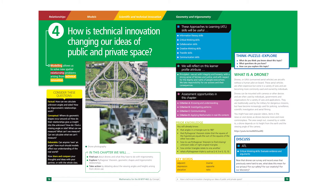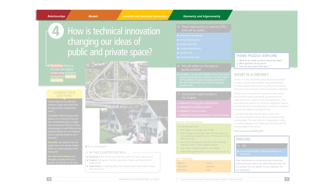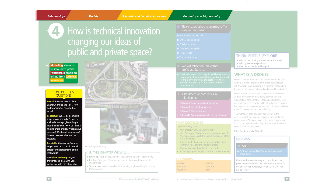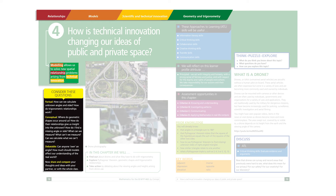Each chapter is designed to lead you through an inquiry, through the key concepts of a subject, framed within the key concept, related concept and the global context. In mathematics we have the four branches: number, algebra, geometry and trigonometry, and statistics and probability — and each of those is represented throughout the book. The statement of inquiry provides the framework for the inquiry, and the questions that follow — factual, conceptual and debatable — support that inquiry and support teaching and learning throughout.